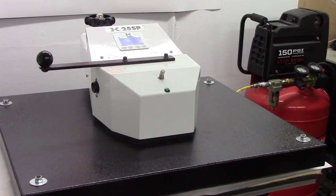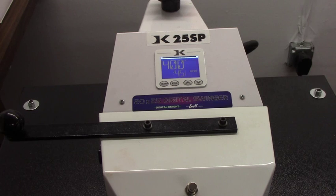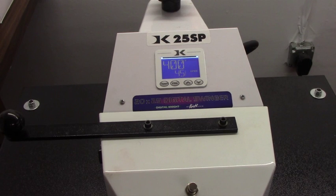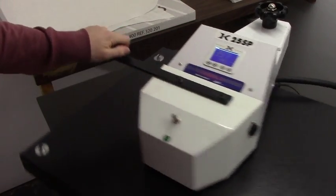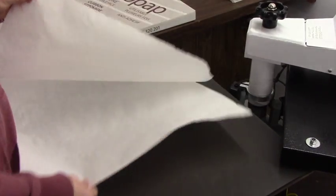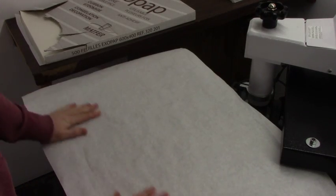Remember that the heating temperature, press time, and pressure are subject to change based on your geographical location and the substrate you are pressing on. Place a piece of butcher paper on the press to prevent ink from transferring onto your press.